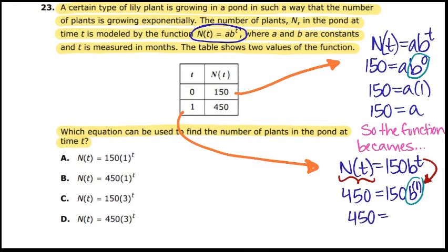So that's going to simplify to 450 is equal to 150 times b. Then you could just do the opposite of multiplying by b, which is dividing on both sides. So I'm going to divide 150 on both sides. Then I'm going to have your final answer for b.